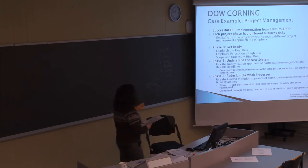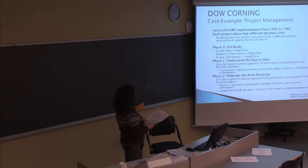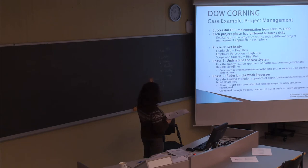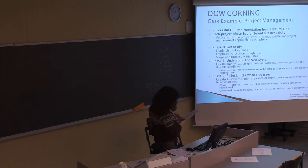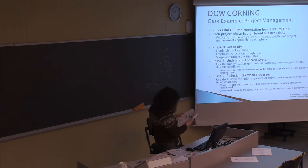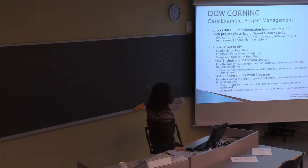There was also a case in the book about Dow Corning, talking about the implementation of a new system. In different phases of the project — initiation, planning, etc. — they had different types of risks; it wasn't the same at every phase. At phase zero, leadership was high risk, employee perception was high risk, and scope and urgency were high risk. They used different approaches for different phases.